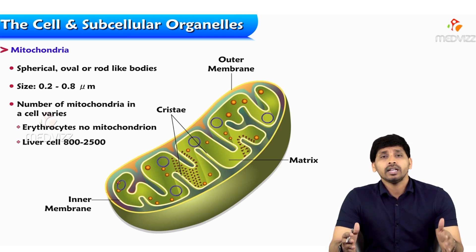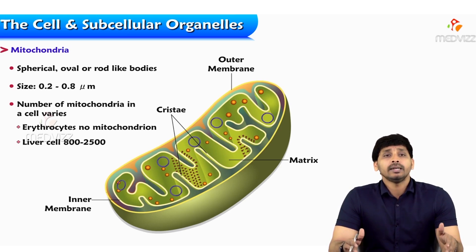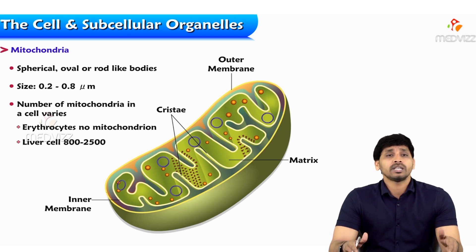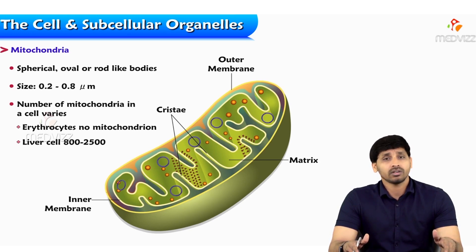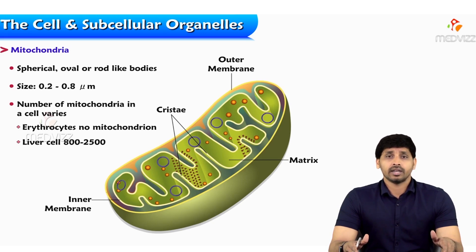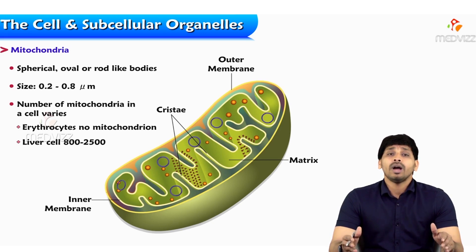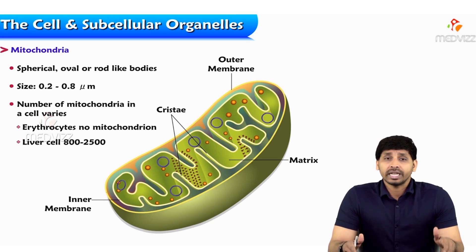Mitochondria is called the powerhouse of the cell because the main energy-producing metabolic pathways are present here, such as the Krebs cycle. The maximum number of ATPs are generated from the degradation of glucose by the Krebs cycle and the electron transport chain. One molecule of glucose degraded through the Krebs cycle and electron transport chain gives 24 ATPs.